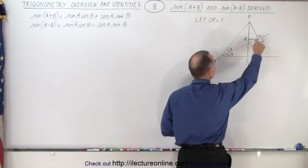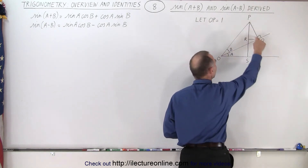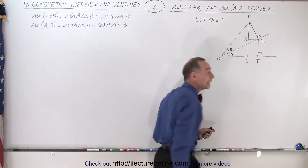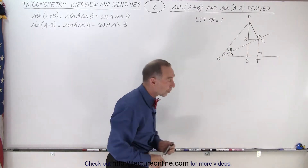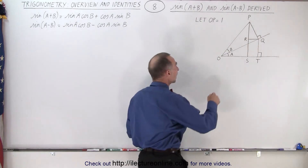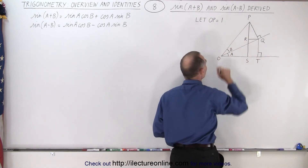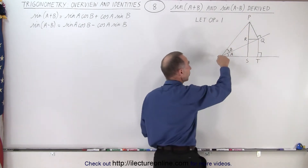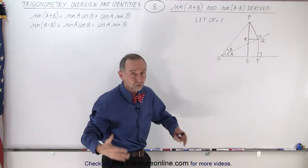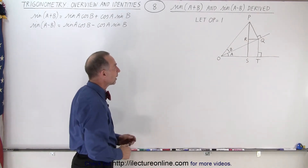Notice we have two triangles — this triangle right here with angle a, and this triangle right there with angle b. Notice both of them are indeed right triangles. We're going to say that the distance from O to P, by definition, is equal to 1. That's the hypotenuse of this top triangle, and we can make it any distance, so to make it easy, let's set it equal to 1.